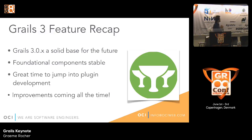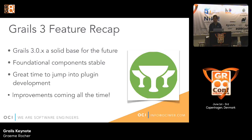Grails 3 is a solid base for the future, and we're not going to spring Grails 4 anytime soon. We're very much focused on stability of the platform and building on top of the base we've created with Grails 3. The foundational components are stable. Improvements are coming all the time — we've started a policy of doing a point release every couple of weeks so you don't have to wait long for bug fixes.